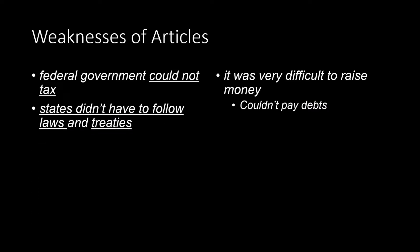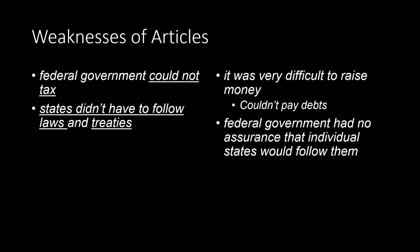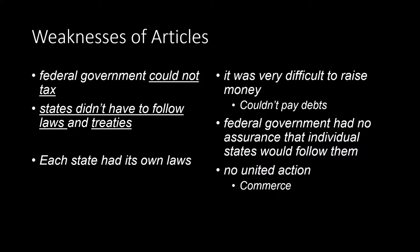States didn't have to follow laws and treaties, so the federal government had no assurance that individual states would follow any of its policies. Each state had its own laws, making united action very difficult. This was particularly tricky for commerce — some states put tariffs on trade from other states, the equivalent of Massachusetts putting a tariff on goods from New York. This makes growing an economy very difficult. It was weak on purpose, though — the debate over states' rights versus federal power is still with us today.